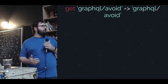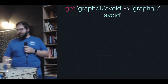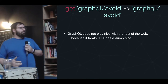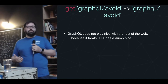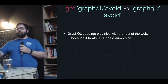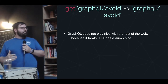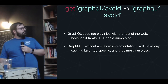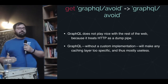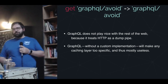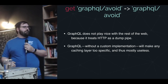What are some reasons why we might want to avoid GraphQL? One of the big ones is it doesn't play nice with the web — it treats HTTP as a dumb pipe and just throws everything through POST requests, and doesn't play nice with normal conventions. Also, without custom implementations, a caching layer will be too specific and mostly useless.